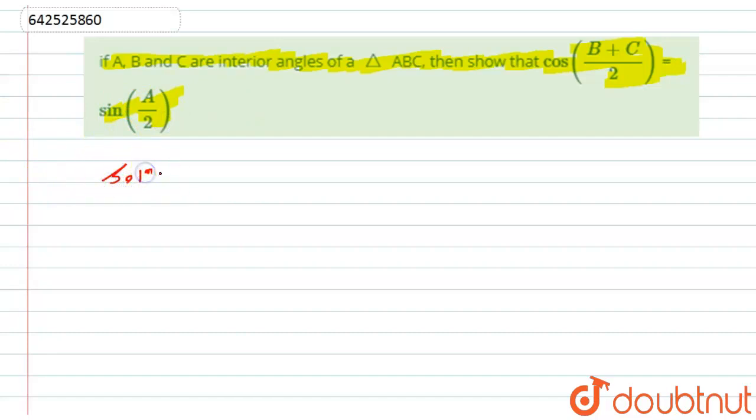First of all, what is given to us? Here we have given that A, B, C are the interior angles of a triangle, and we have to prove...